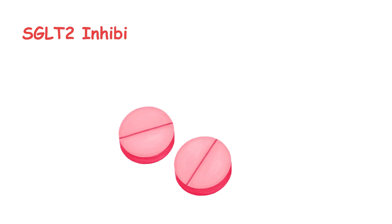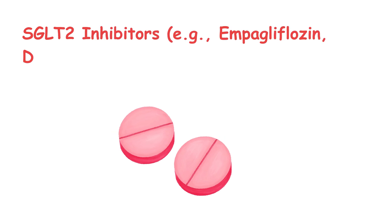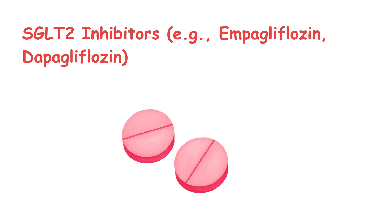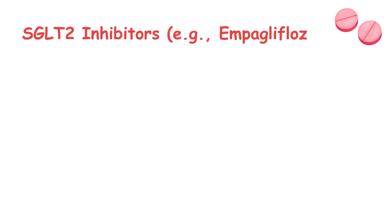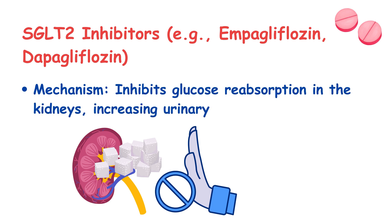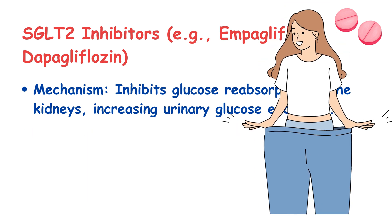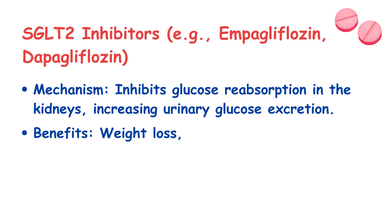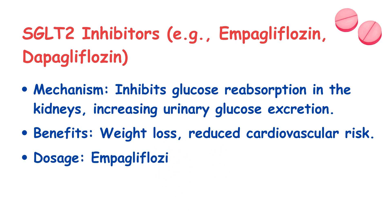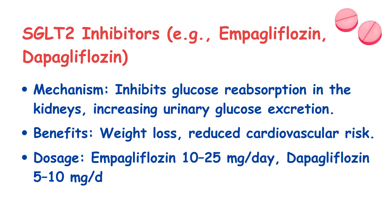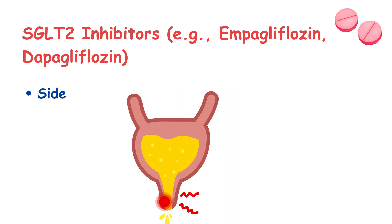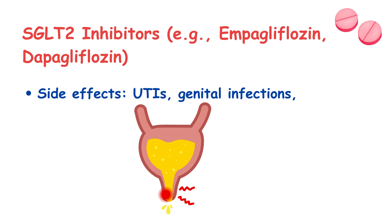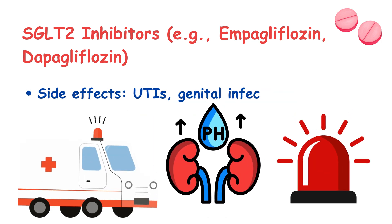SGLT2 inhibitors — examples include empagliflozin and dapagliflozin. These lower blood glucose by promoting its excretion through urine. Bonus: they also aid weight loss and cut cardiovascular risk. Starting dose ranges from 10 to 25 mg for empagliflozin and 5 to 10 mg for dapagliflozin. Watch out for UTIs and a rare but serious risk: euglycemic diabetic ketoacidosis.